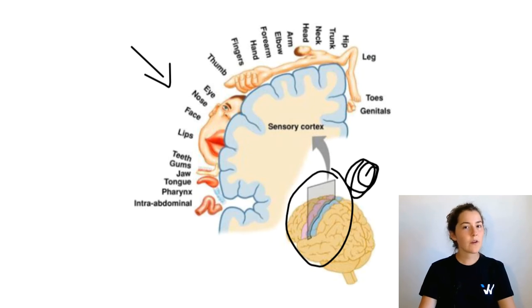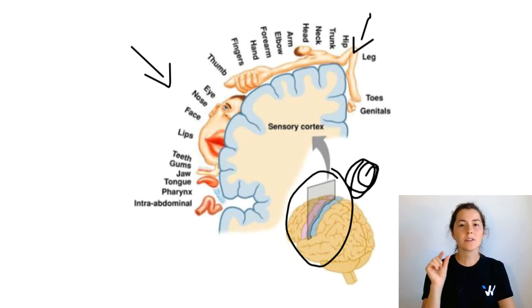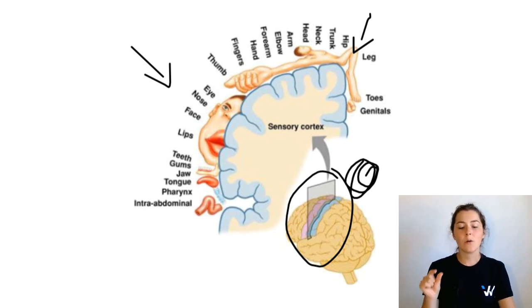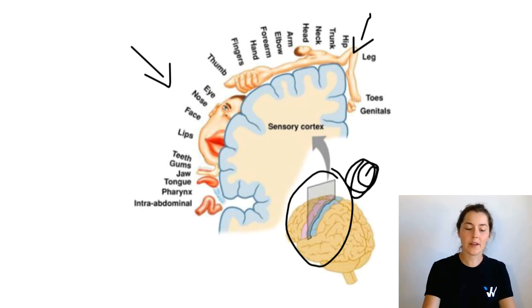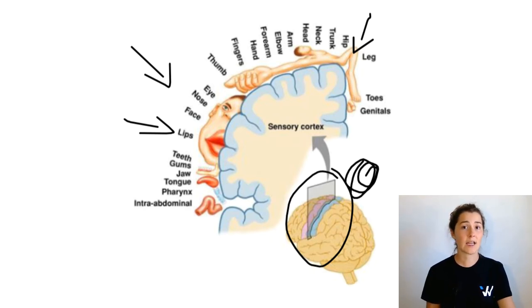Although it's very clear that the sensory cortex is laid out in a map fashion, it's not very proportional. We can see here that the hip and leg area does not really cover much of the cortex at all, so we don't really have a ton of sensation in this area, whereas our lips over here pretty much take up the same amount of cortex as the entire hip and upper leg combined.